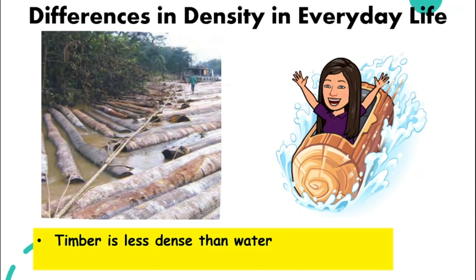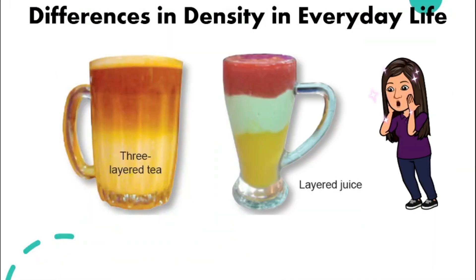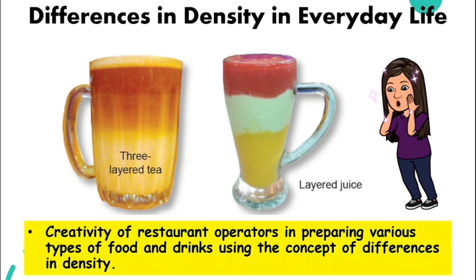So if they float on water, we can get the help of the current and the river to transport them to another village, maybe down the river. Have you ever seen these fancy drinks? Maybe three layer tea or layered juice. So the restaurant operators normally get very creative when they prepare different types of food and drinks by using the concept of differences in density.